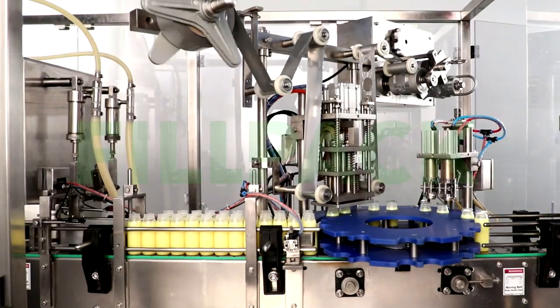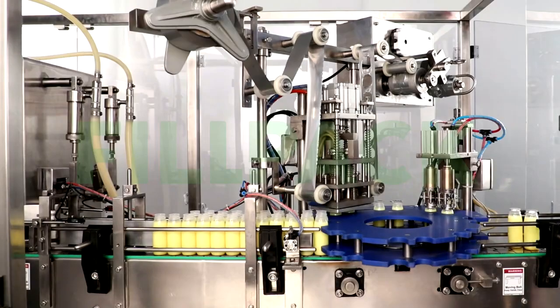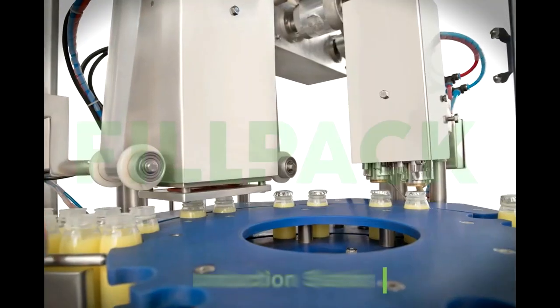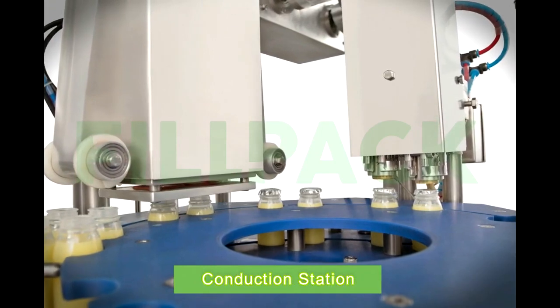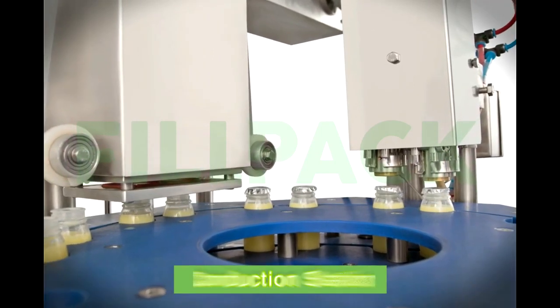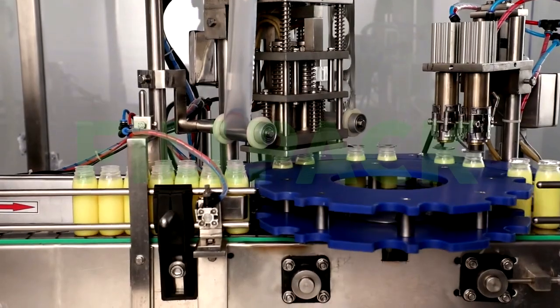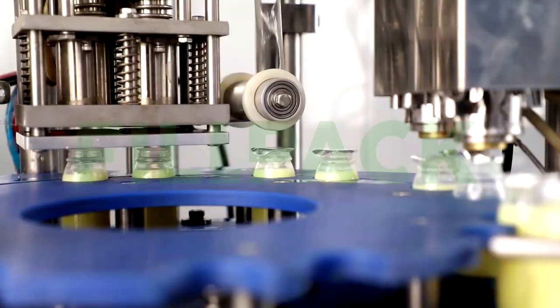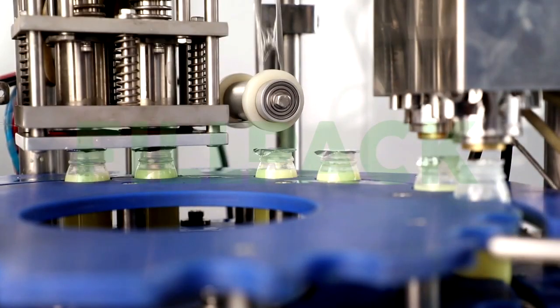The filled bottles arrive at this station for sealing. At this station, sealing and cutting operations are done simultaneously. Clear PVC Roll or PVC Coated Aluminium Roll can be used.